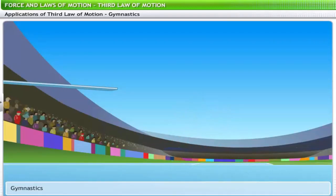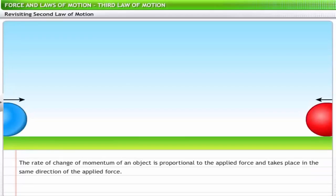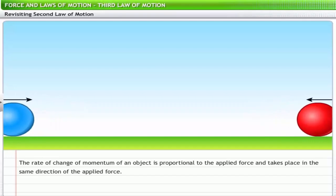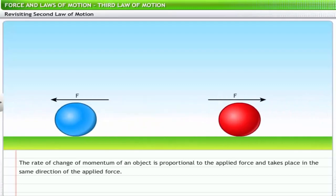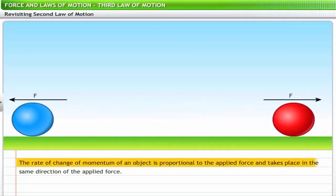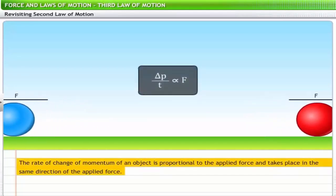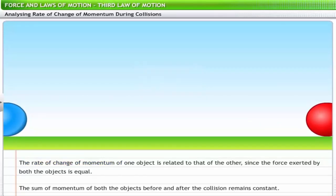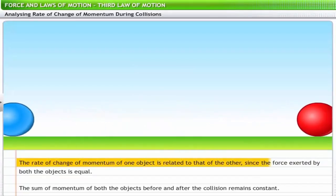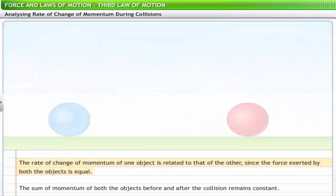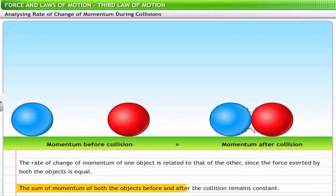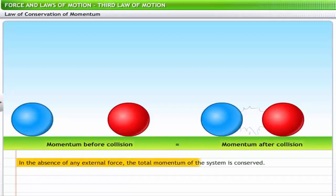Every action force is matched with a reaction force equal in magnitude and opposite in direction. In the third law, two equal forces act simultaneously against each other on two objects during a collision event. According to the second law, the rate of change of momentum is proportional to the applied force, so during a collision the rate of change of momentum of one object is related to that of the other. Since the forces exerted by both objects are equal, the sum of momentum of both objects before and after the collision remains constant. In the absence of any external force, the total momentum of the system is conserved — this is the law of conservation of momentum.